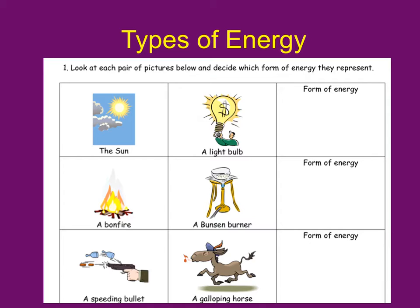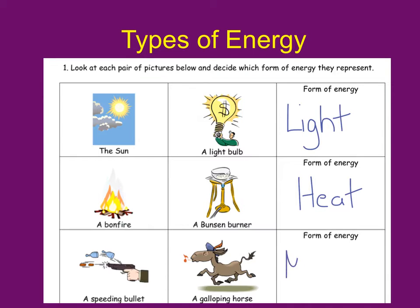We've got the sun and a light bulb — remember to pause so you're not seeing the answer, then come back and see that the answer should be light energy. The bonfire and a Bunsen burner — pause, and when you come back you should see the answer is heat energy. Now a speeding bullet and a galloping horse — thinking of the nine energy types we've already learned, this is going to be movement or kinetic energy.